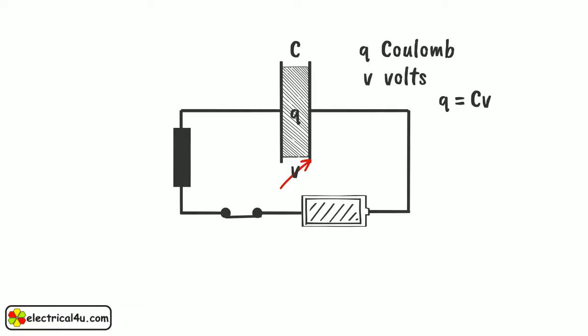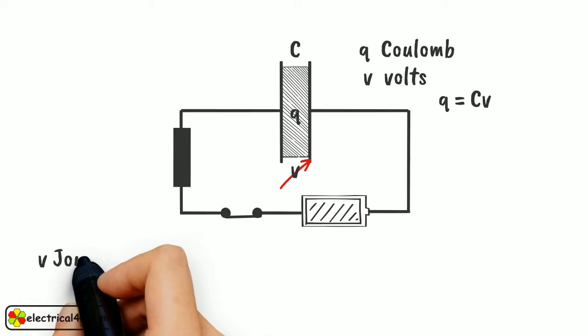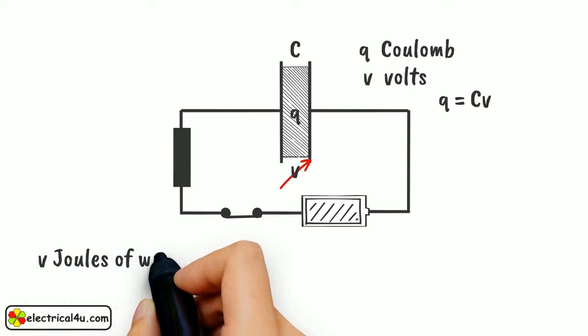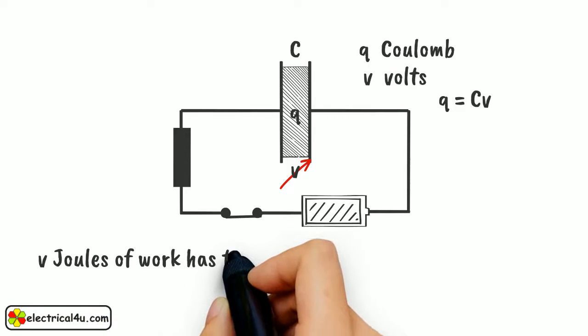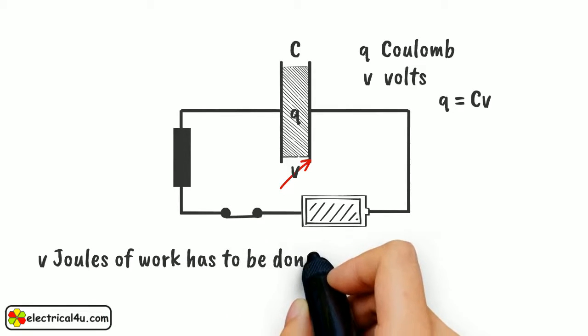Again, as per definition, the potential difference of V volts across the capacitor means V joules of work has to be done in transferring one Coulomb from one plate to the other.